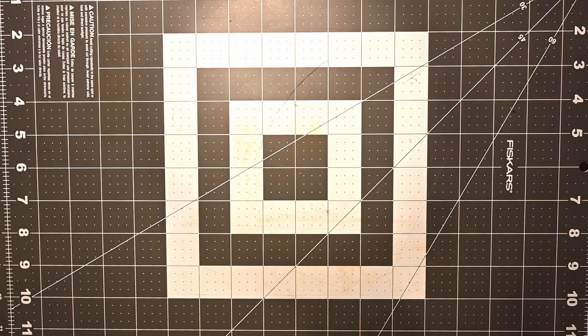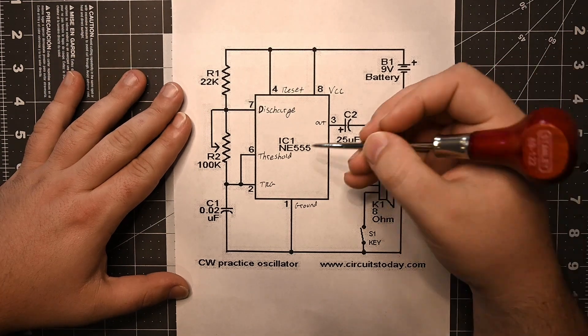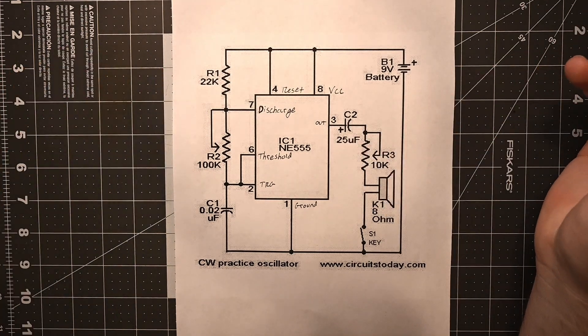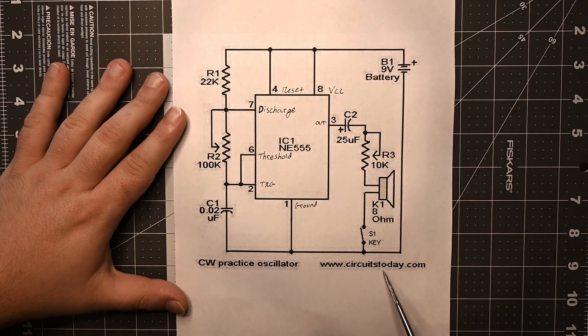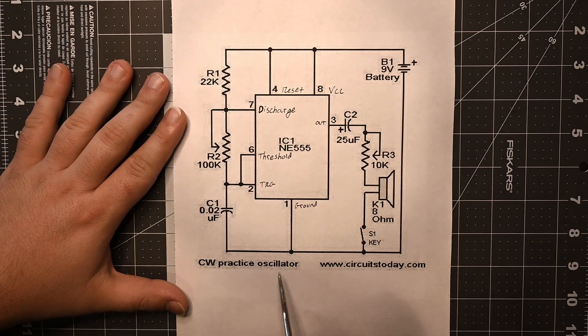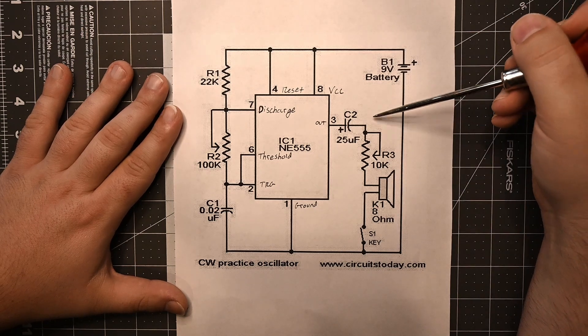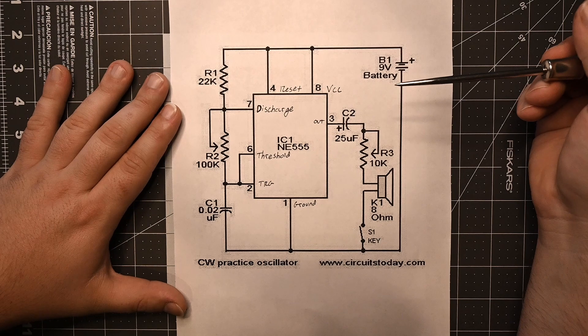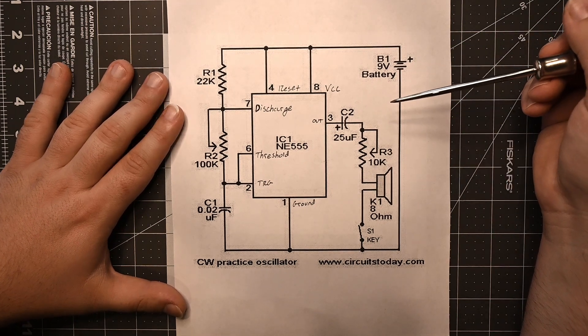Hey guys, today we're going to be making an oscillator using the NE555 timer by Texas Instruments. I got this schematic from circuitstoday.com as you can see here and they're calling it the CW Practice Oscillator. Although there are other things you could use it for, I'm going to be using it to drive a little speaker so that I can practice Morse code without having to go on the air or use the internet.